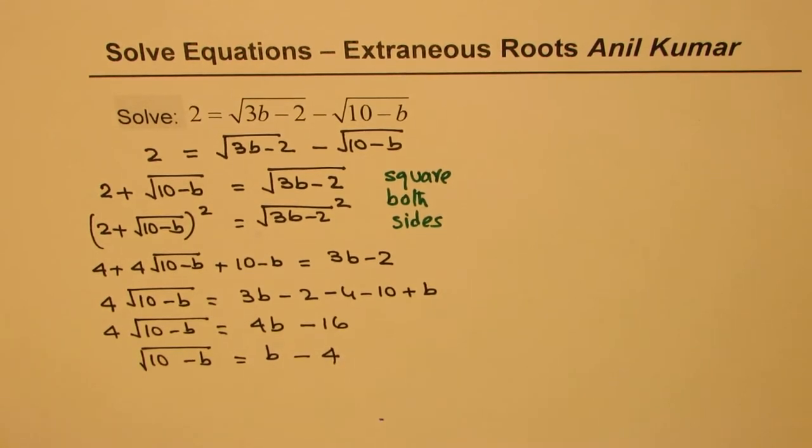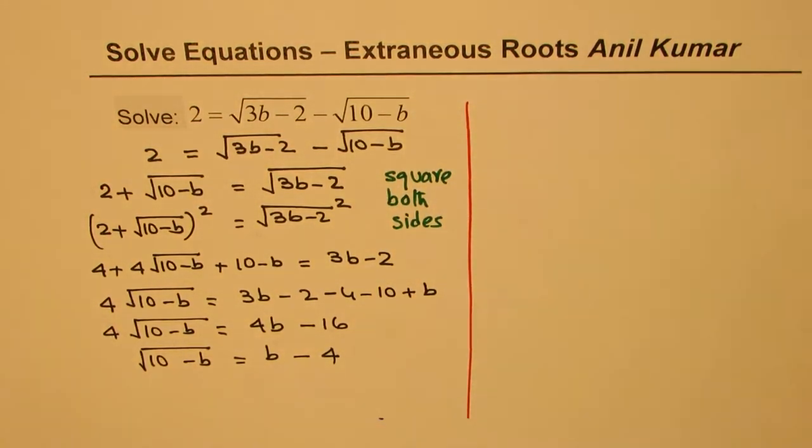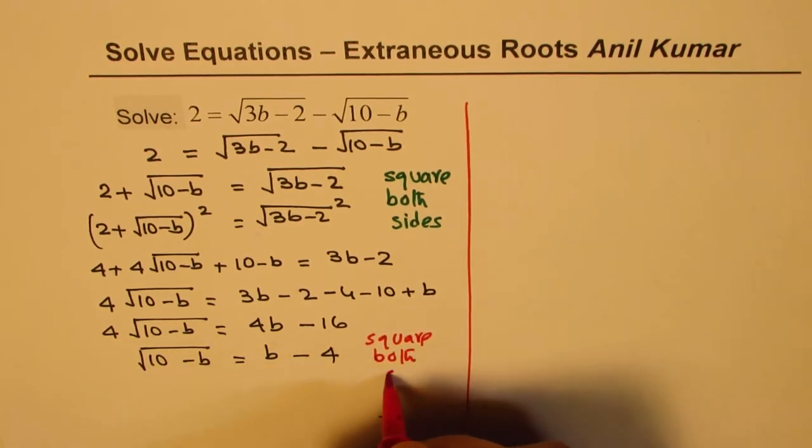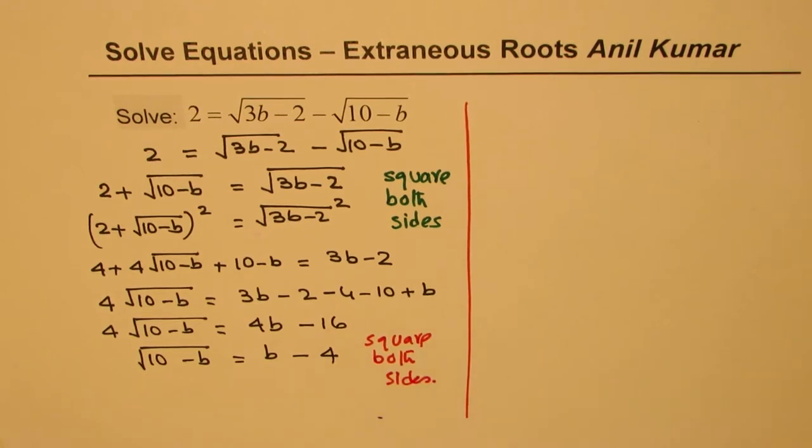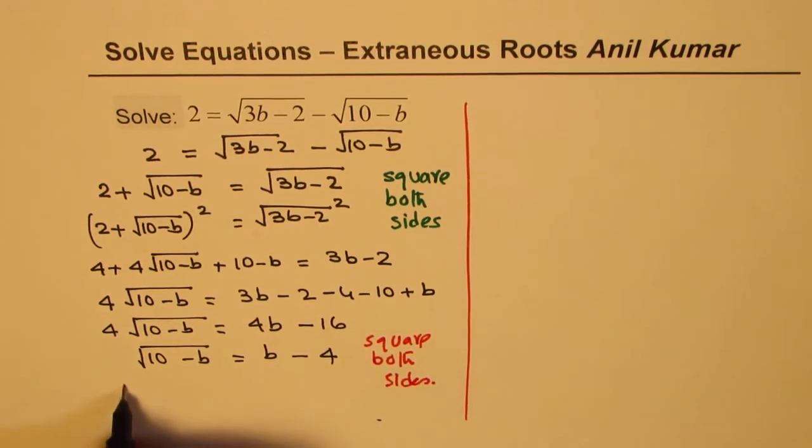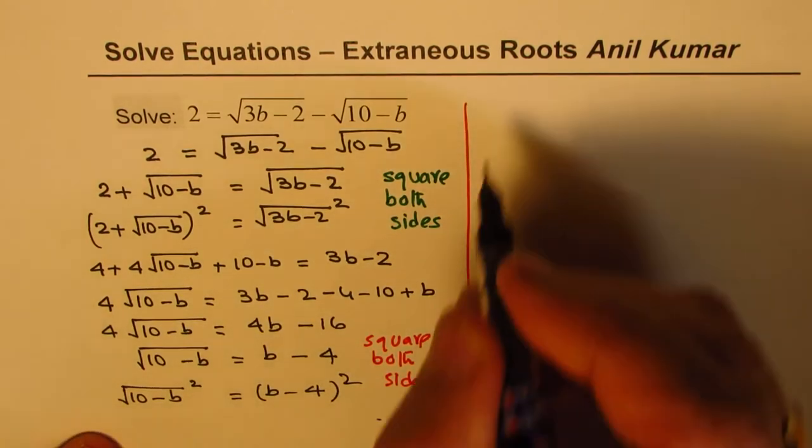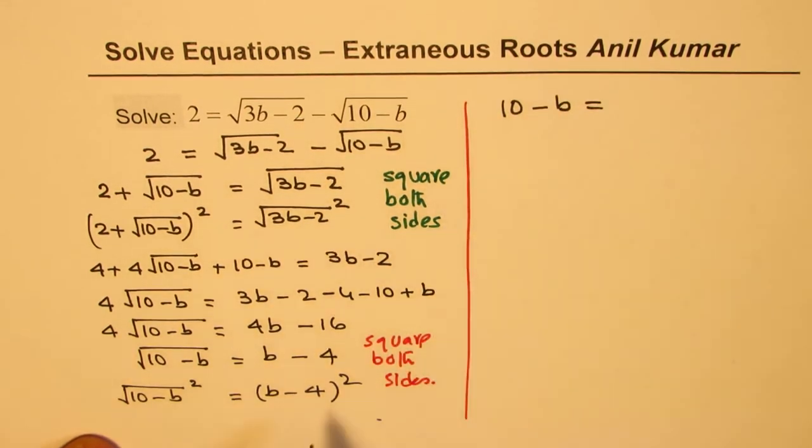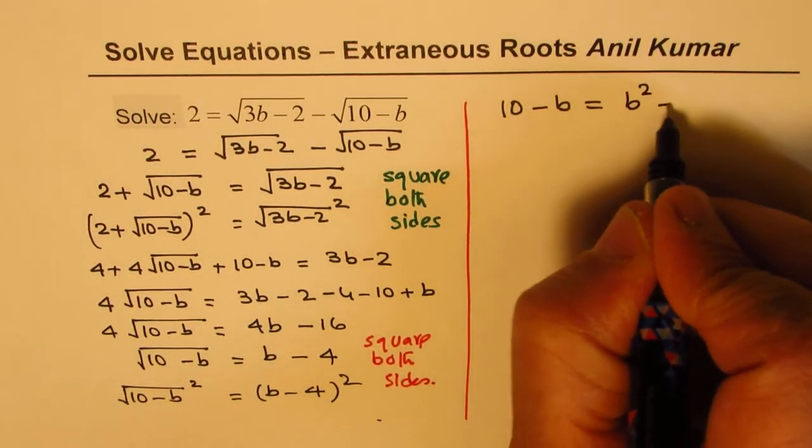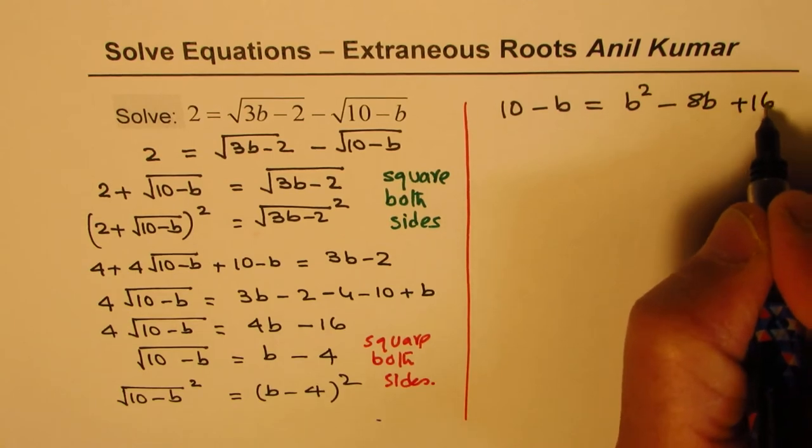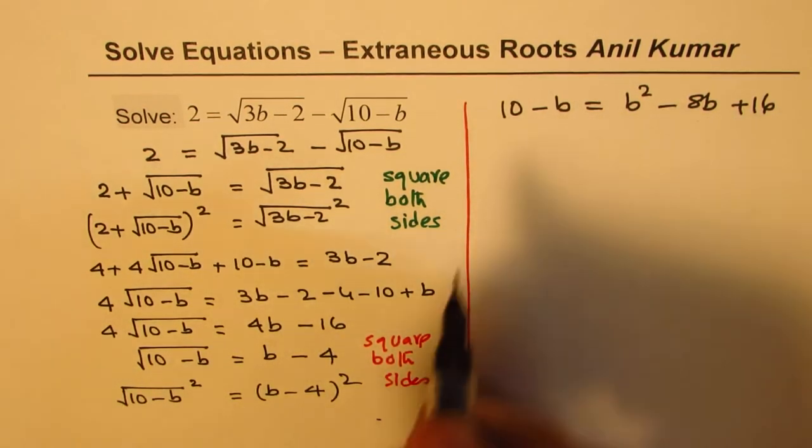Now again we have to square so that we can find the value of b. So once we square both sides, when you square both sides you get square root of 10 minus b whole square equals b minus 4 whole square. Squaring will give us 10 minus b equals to, and if you square this you get b square minus 2ab which is 8b plus 4 square which is 16.